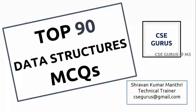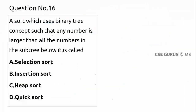Hello friends, welcome to our channel CSC Gurus. Moving on to question number 16: a sort which uses binary concept says that any number is larger than all the numbers in the subtree. Of course, larger is possible and somewhat smaller is also possible, which is heap sort.